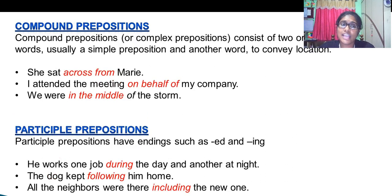The baby climbed onto the table. Compound prepositions or complex prepositions consist of two words, usually one simple preposition and another word to convey the location. She sat across from Maria. We were in the middle of the storm. These are the examples.